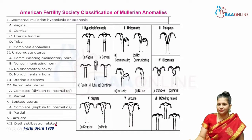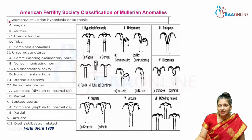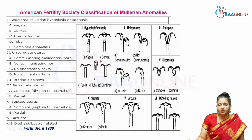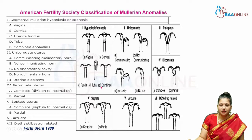In the 1988 AFS classification, Class 1 covers agenesis or atresia of individual structures. If the vagina is not formed, it is called 1A; if the cervix is not formed, it is 1B; if the uterine fundus is not formed, it is 1C; if the tubes are not formed, it is 1D; and if there is a combined atresia of any of these structures, it is called 1E.